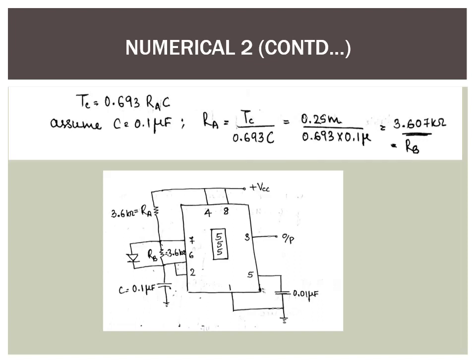To compute the values of Ra and Rb, we use the equation Tc = 0.693 × Ra × C. Since 50% duty cycle means equal charging and discharging times, both Ra and Rb use the same equation. Assuming C = 0.1 µF, we obtain Ra = Rb = 3.607 kΩ. Since the question asks for a design, the schematic must include a diode connected in parallel with resistance Rb.